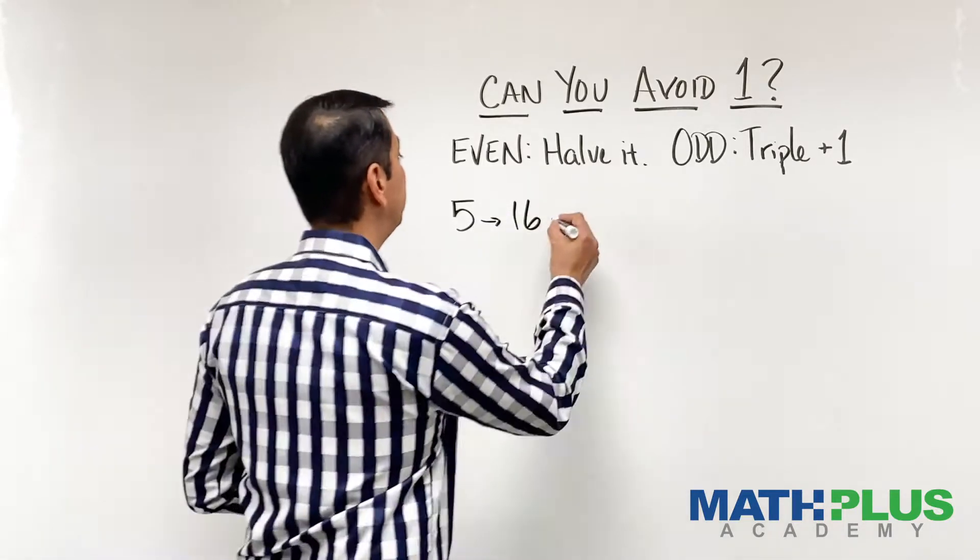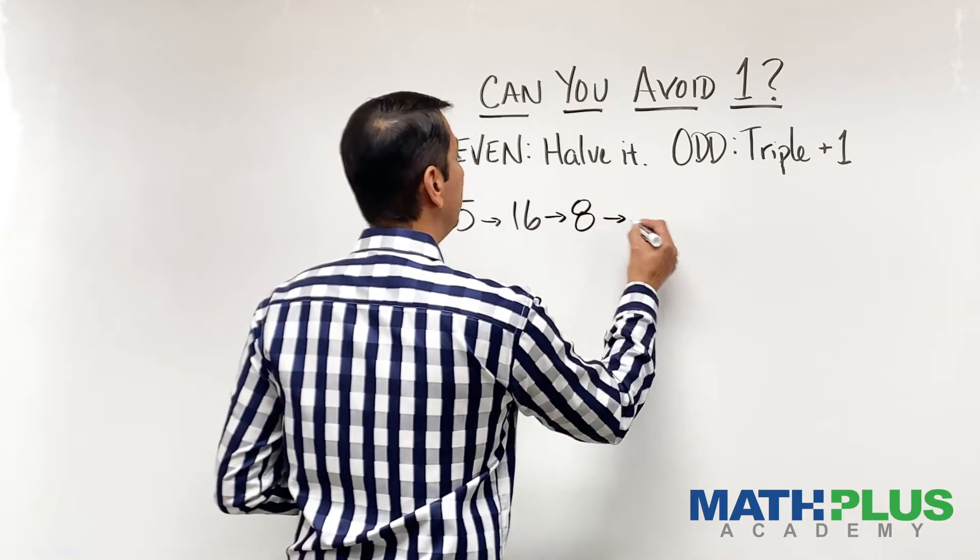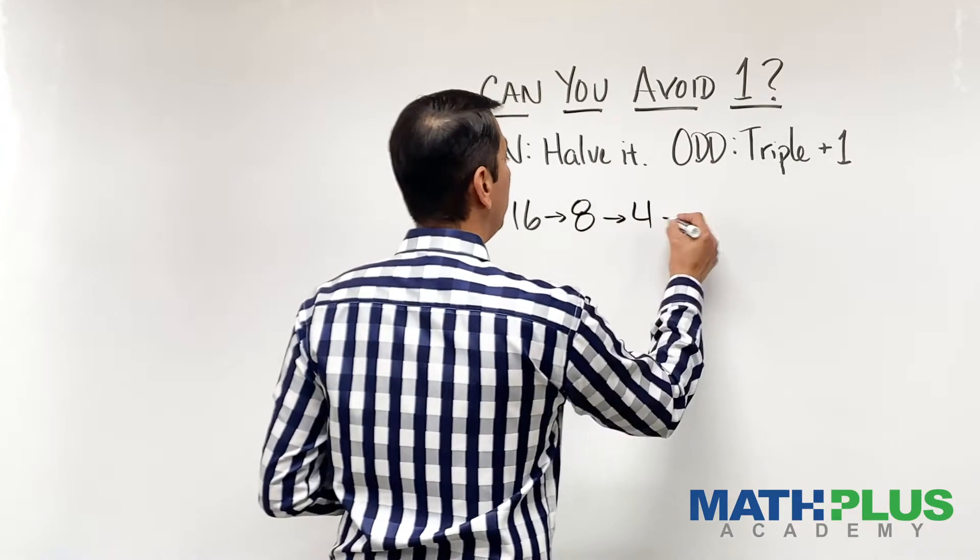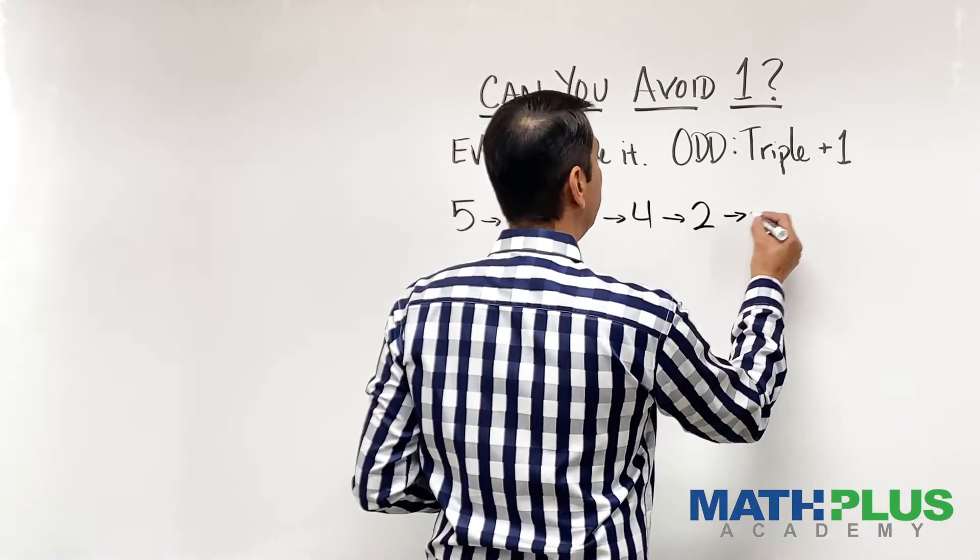16 is even, so I'm going to take half or divide by two. That gives me eight. Eight's even, I divide by two again. That's four. Four is even, leading me to two. Two is even, leading me to one.